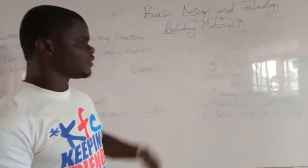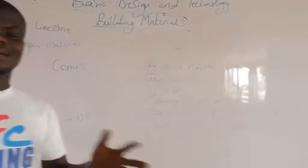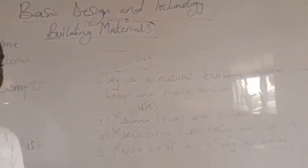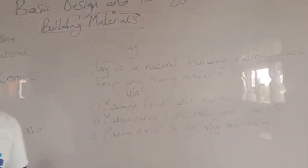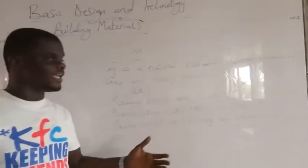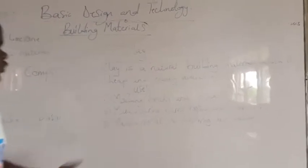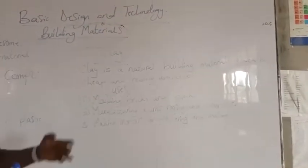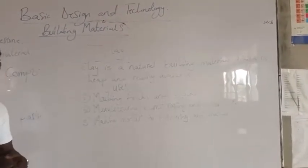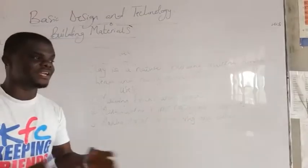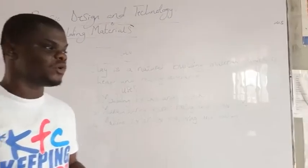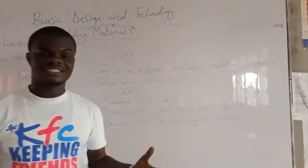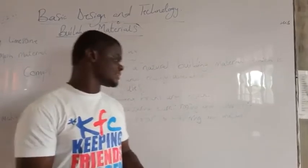So now we move on to clay. Now clay is something that we know. We get clay from waterlogged areas. So clay is a natural building material which is cheap and readily available. We don't even buy them — we get them from waterlogged areas.